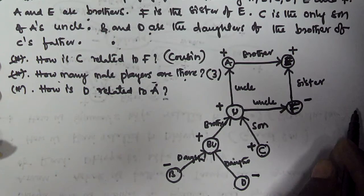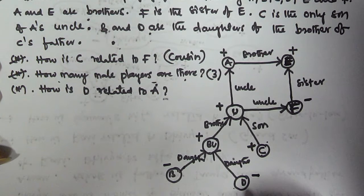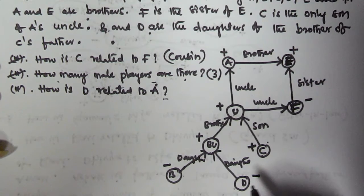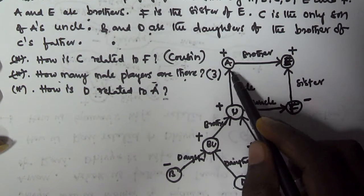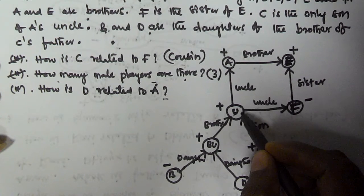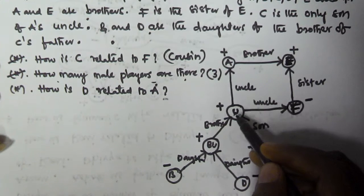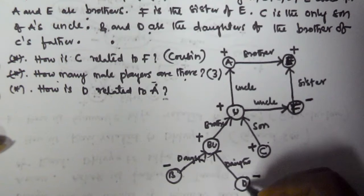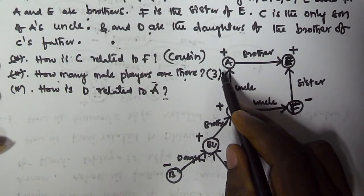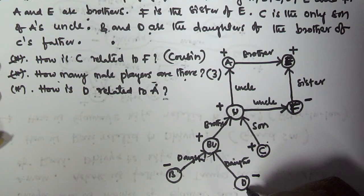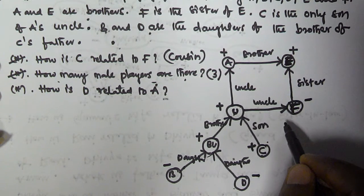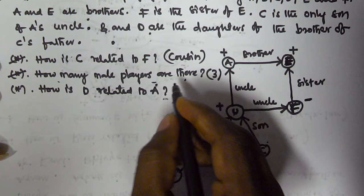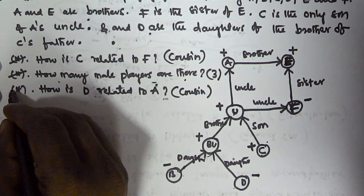How is D related to A? U is the uncle of A, and U's brother BU is also uncle to A. D is the daughter of BU, and BU is the uncle of A, so D is the uncle's daughter of A. An uncle's daughter is called a cousin, so D is the cousin of A.